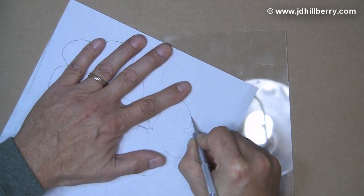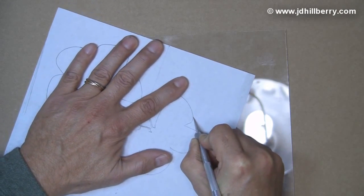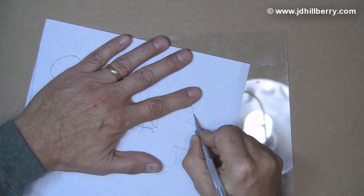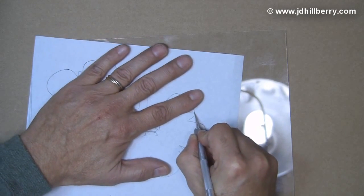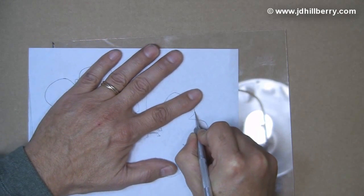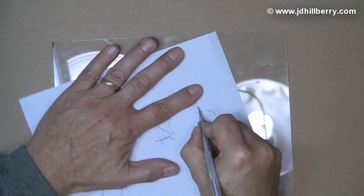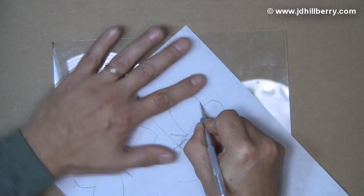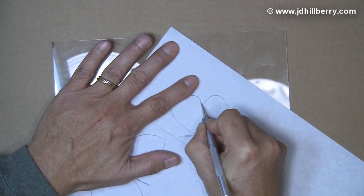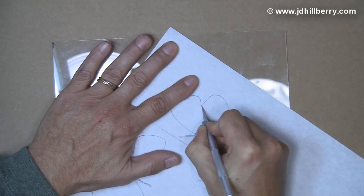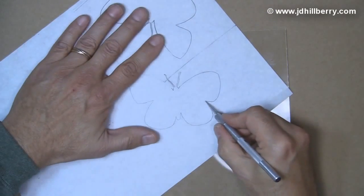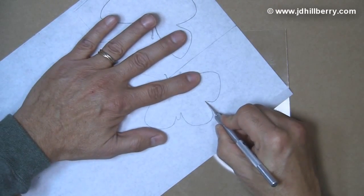You'll notice instead of turning my hand, I'm pivoting the frisket underneath my X-Acto knife. I find it easiest to keep the blade on the frisket. I don't do a lot of picking it up unless I come to a really sharp point, and then I'll pick it up and start in a new place. But if you leave it down on the frisket, you'll end up with much smoother cuts.